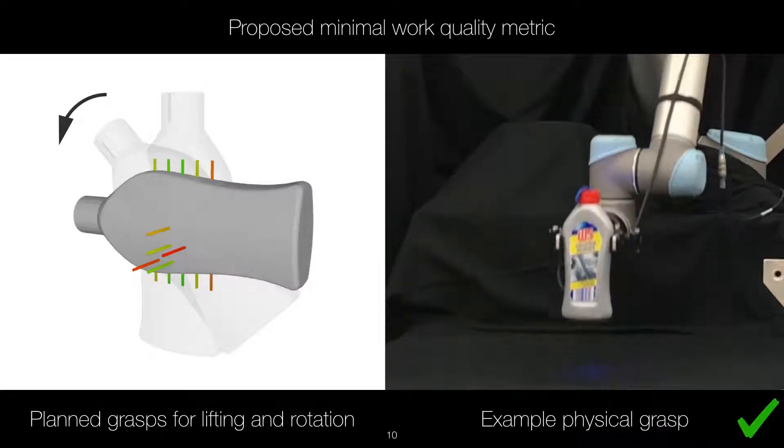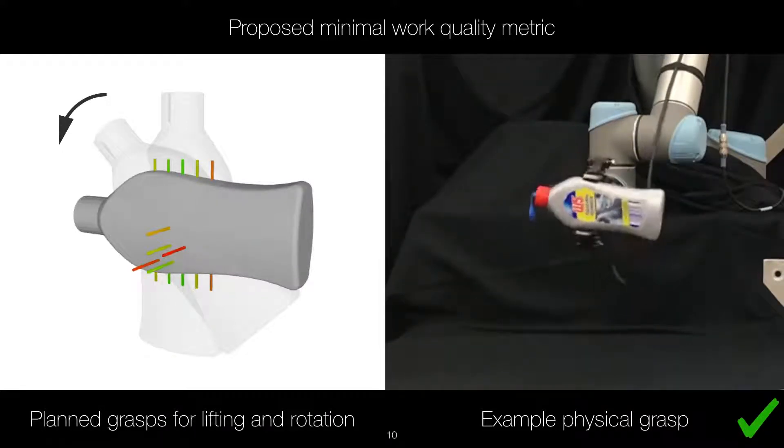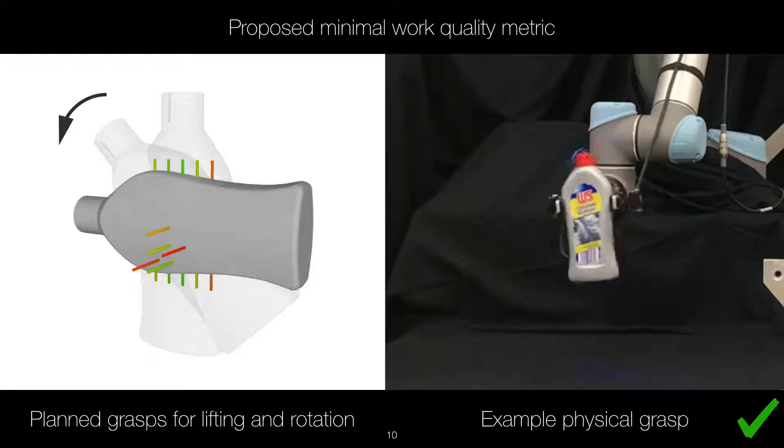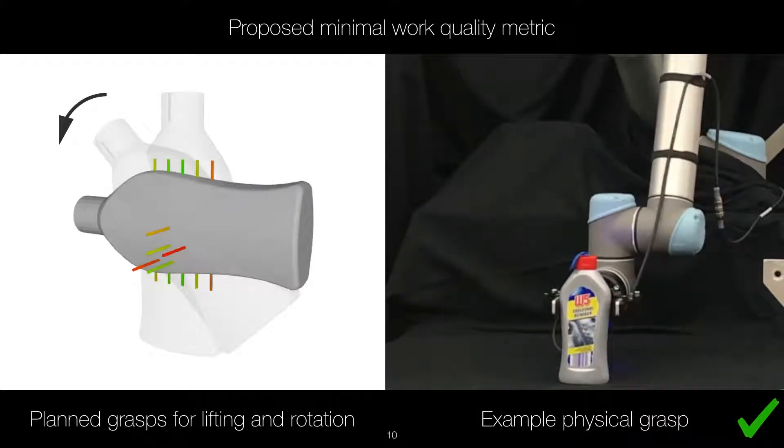Here we show planned grasps with the minimum work quality metric for a lifting and 90 degree rotation task and an example physical grasp.